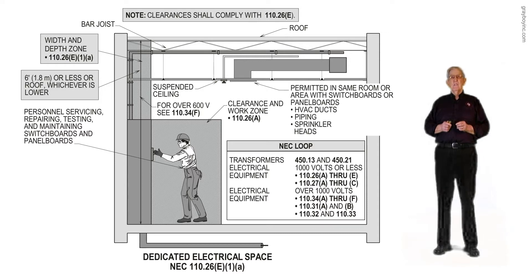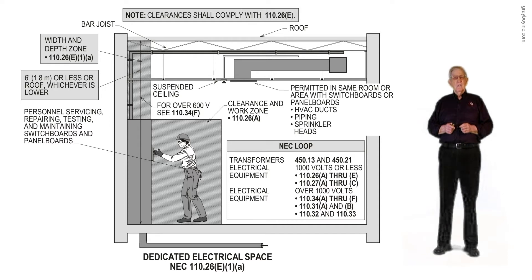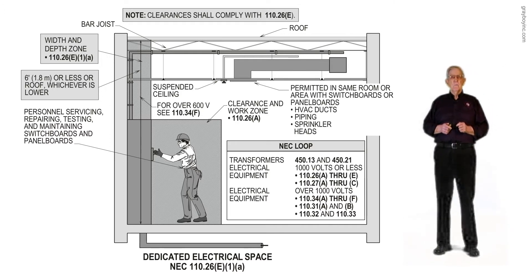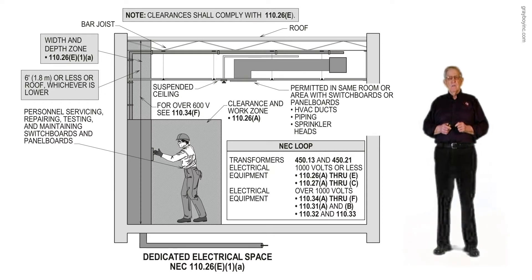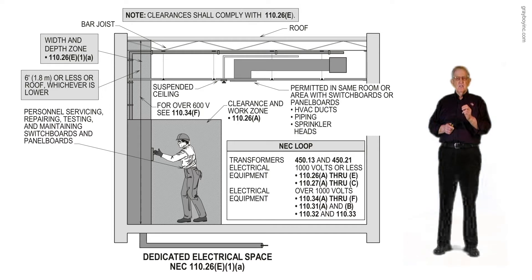Notice we have the clearance in workspace of 110.26A, and we have the three-foot because condition 1, 2, or 3 is not applicable here — we do not have a wall shown behind the worker's back. Notice they can switch 480-volt, 208, 240-volt, and 120-volt breakers as long as they're maintained by NFPA 70E table 130.5C and chapter 7 of NFPA 70B.